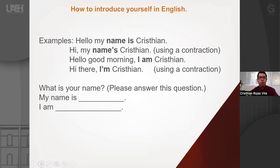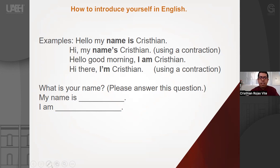Here is an example for you watching this video. You can say: Hello, my name is Christian. Or you can also say: Hi, my name is Christian. But notice we are using a contraction — instead of saying 'my name is', we use 'my name's'. For example: Hi, my name's Christian. Or: Hello, good morning, I am Christian. Or: Hi there, I'm Christian. If you pay attention to this presentation, you can observe that we can use contractions in English, and they are very easy to use. Just pay attention when you can use a contraction — they are highlighted in bold black letters.